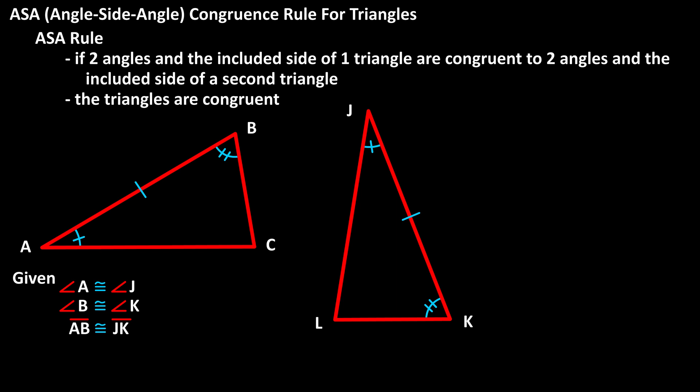In this example, segment AB and segment JK are the included sides because they are between the given angles. From the ASA congruence rule, we know that triangle ABC is congruent to triangle JKL because two angles and the included side are congruent.